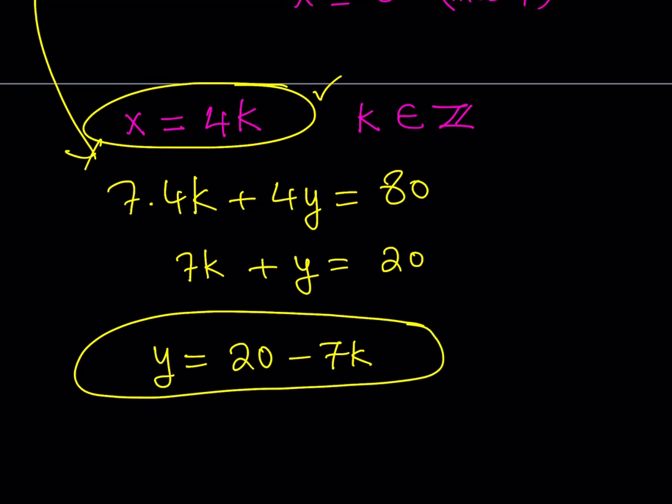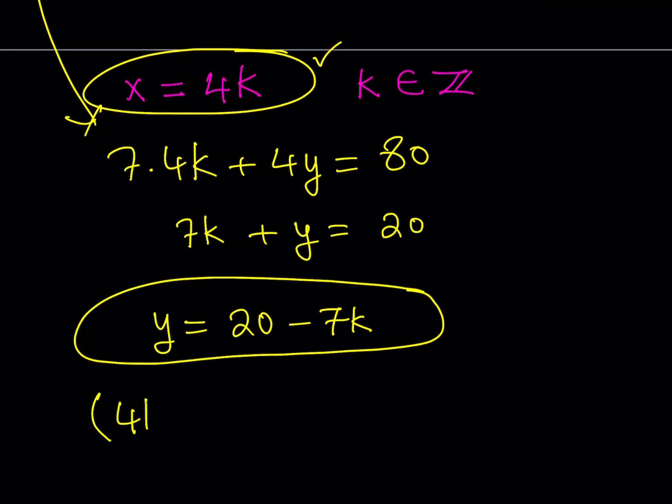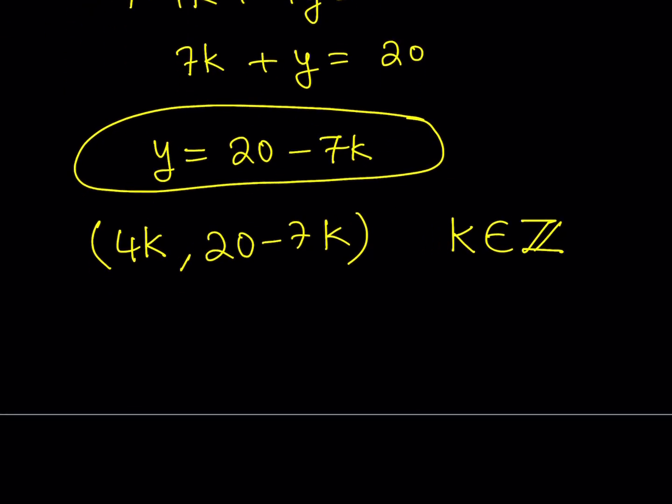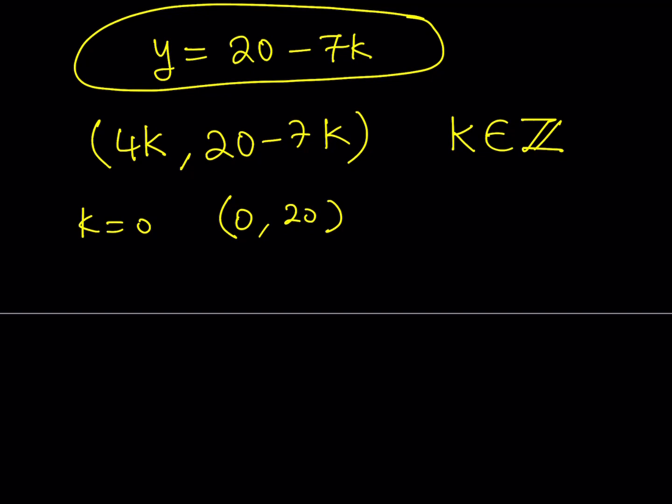We got our solutions, and this is the general solution. So I have this ordered pair for x comma y: 4k comma 20 minus 7k, where k is an integer. For example, if k equals 0, I'll be getting 0 comma 20. Is this a solution of the system? Of course it is. But here's the thing: we only found x and y, but there's a z in the equation. How do you solve for z?